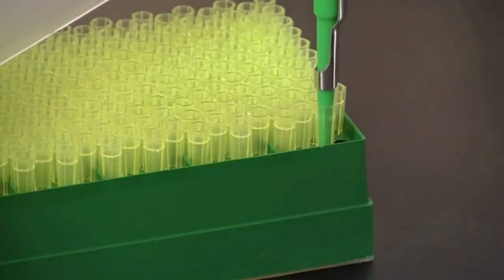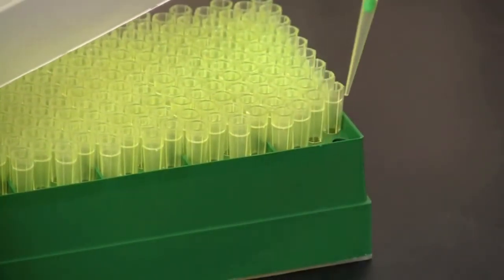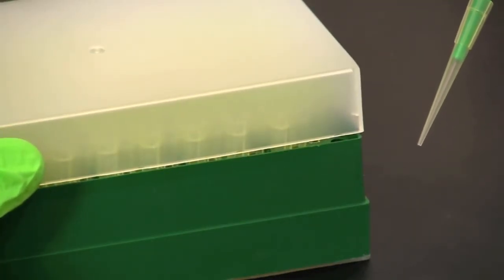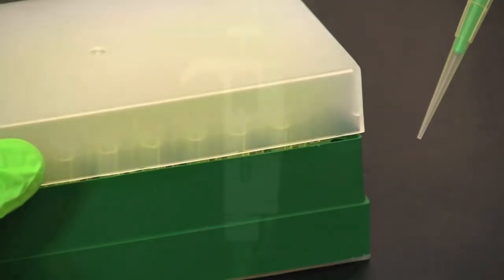After the correct volume has been set, place a disposable tip onto the pipette. It is important to apply gentle but firm pressure so that a good airtight seal is made between the pipette and the tip.